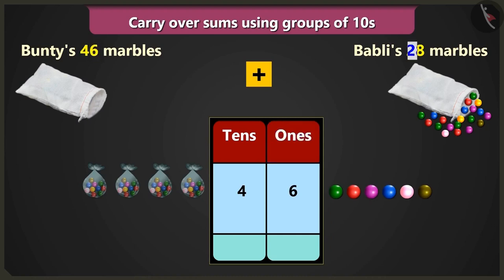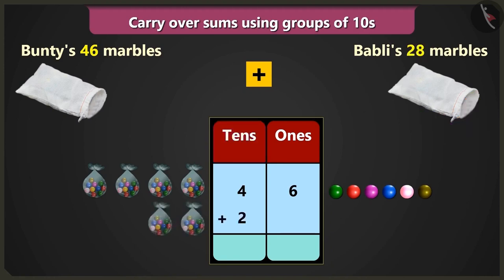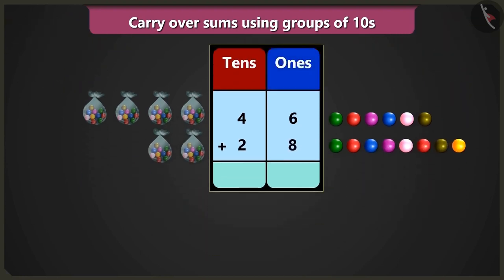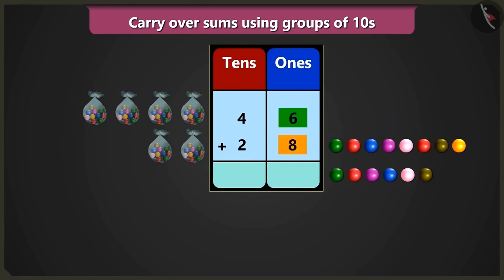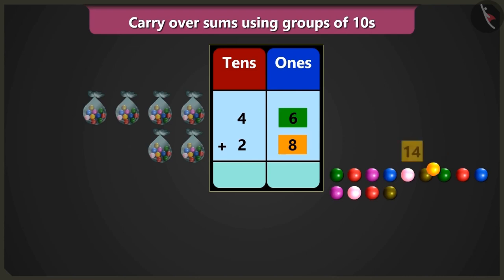And I have 2 tens and 8 ones, so we will write 2 in the box of tens and 8 in the box of ones. Now in the box of ones, to add 6 ones and 8 ones, after 6: 7, 8, 9, 10, 11, 12, 13 and 14 marbles.